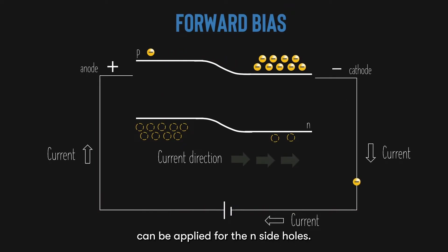The same principle can be applied for the N side holes. This current is limited by the amount of minority carriers. And hence, typical currents in PN junction diode occur within a few amps, depending on the degree of the forward bias.